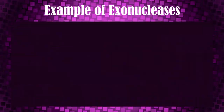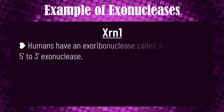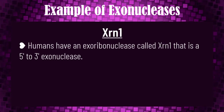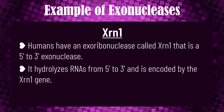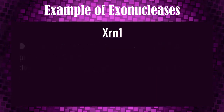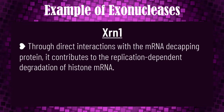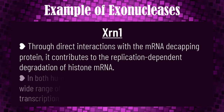Let's get to know the properties of XRN1. Humans have an exoribonuclease called XRN1 that is a 5-prime to 3-prime exonuclease. It hydrolyzes RNA from 5-prime to 3-prime and is encoded by the XRN1 gene. Through direct interaction with the messenger RNA capping protein, it contributes to the replication-dependent degradation of histone messenger RNA in both human and yeast cells.